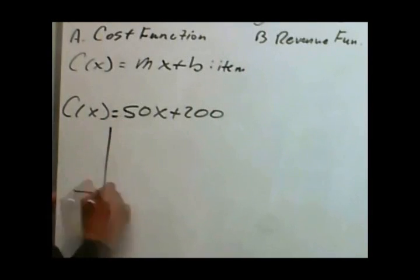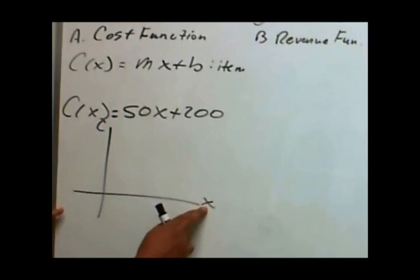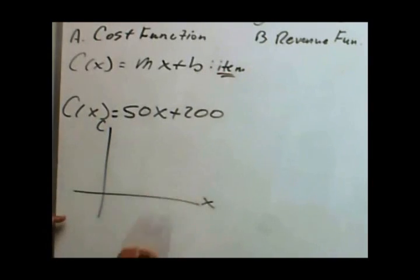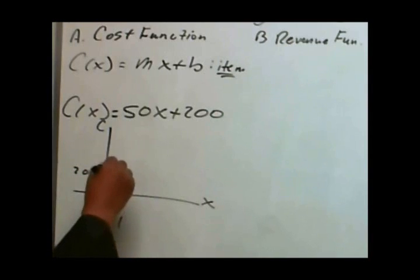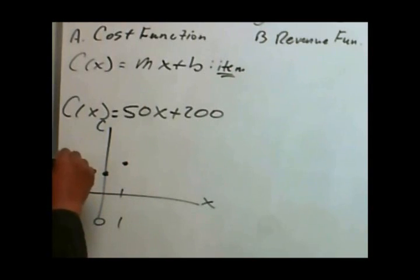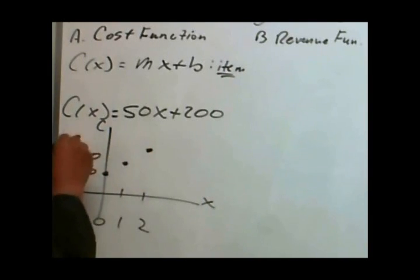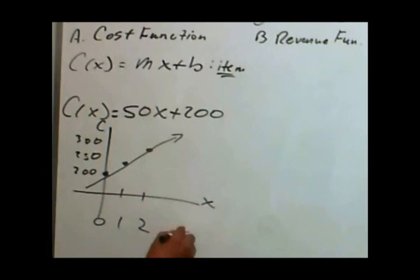If I were to graph this, it's items versus cost — items as input. When I make no items, this costs $200. When I make my first item, it costs $250. To make two items, it costs $300. You see the cost function rises according to how many items are made — the more items you make, the more it costs.